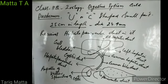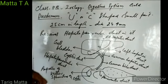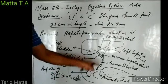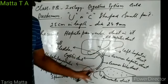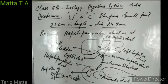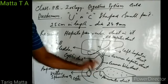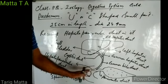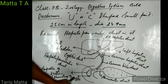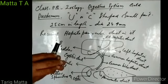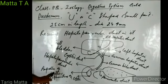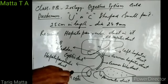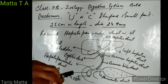So the duodenum is the first U-shaped or C-shaped part of the small intestine. It receives bile and pancreatic juice from the liver and pancreas through a duct known as the hepatopancreatic duct. Before this duct opens into the duodenum, it first dilates to form an ampulla-like structure known as the ampulla of Vater. A sphincter, which is a circular band of muscles that opens or closes an aperture, guards this opening.